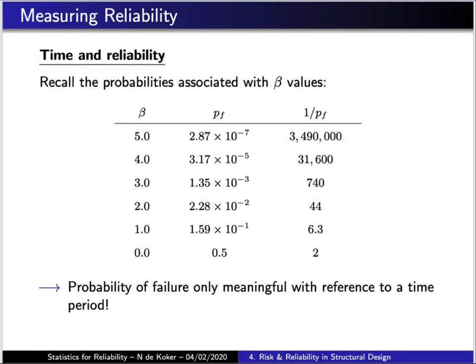Okay, so firstly let's remind ourselves of the typical failure probabilities and the corresponding reliability indices that we encounter in structural design. So later on you will see that in structural design we typically deal with reliability values of three upwards to around just below five, which corresponds to probabilities of failure on the order of one in a thousand all the way up to around one in a million or so.